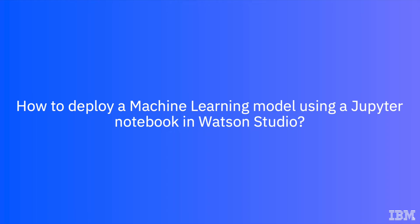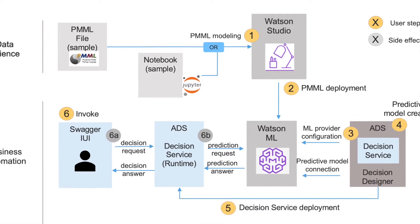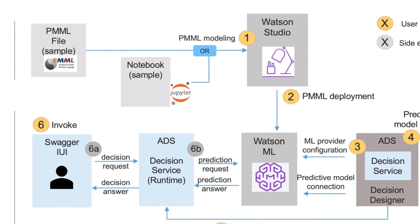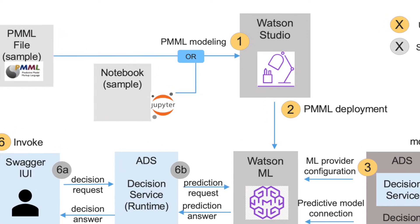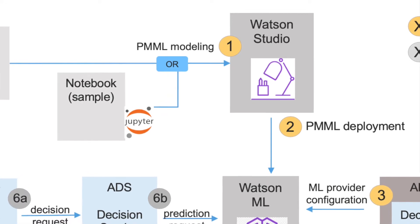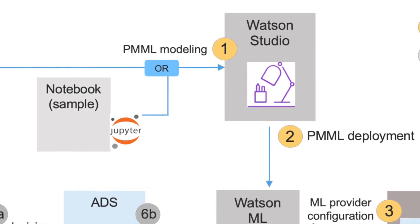Hello and welcome to this very short video on how to leverage machine learning in Cloud Pak for Business Automation, more specifically Automation Decision Services, also known as ADS. What we're going to do today is take a part of a sample that comes with ADS — it's a Jupyter Notebook. We're going to load this notebook into Watson Studio, configure it to correctly point to our Watson ML instance, run it to generate a PMML deployment file, and upload that into Watson Machine Learning, which we can then use to make predictions in ADS.